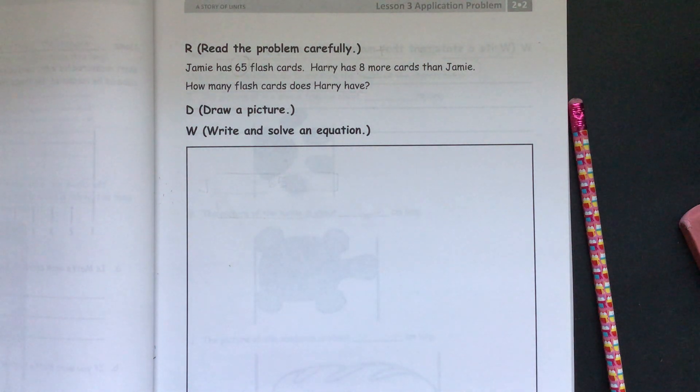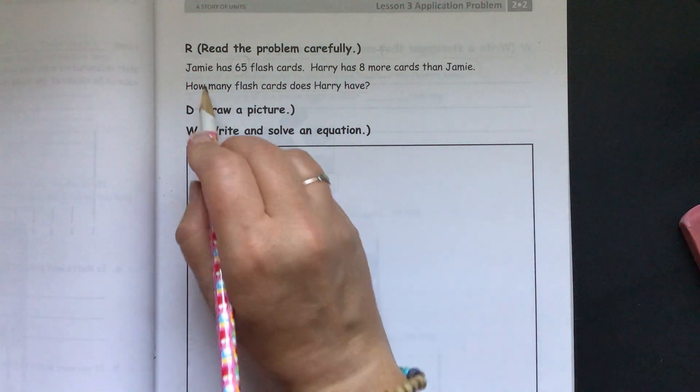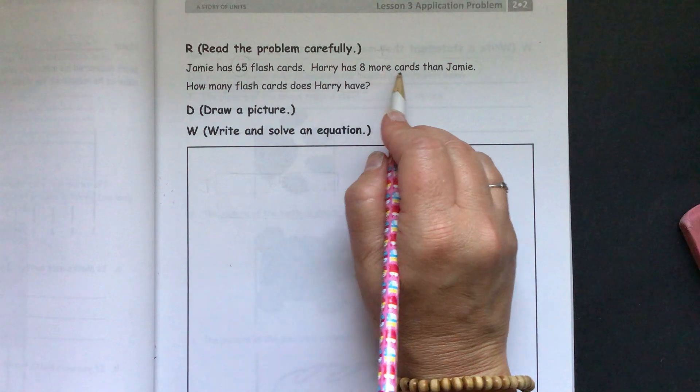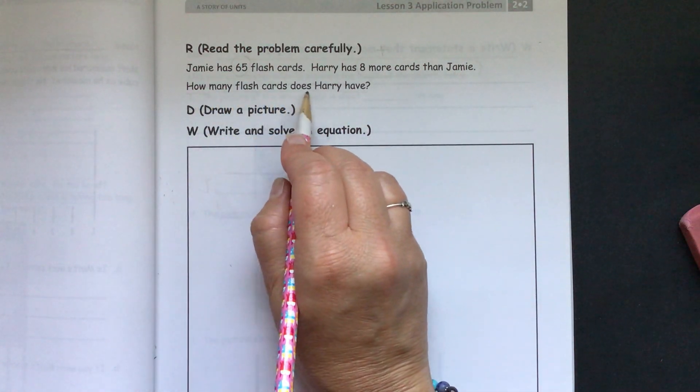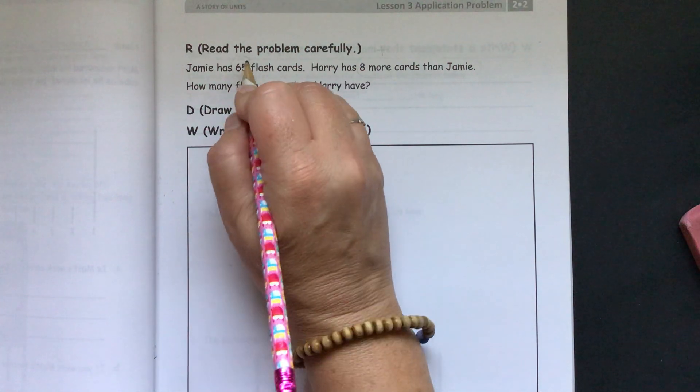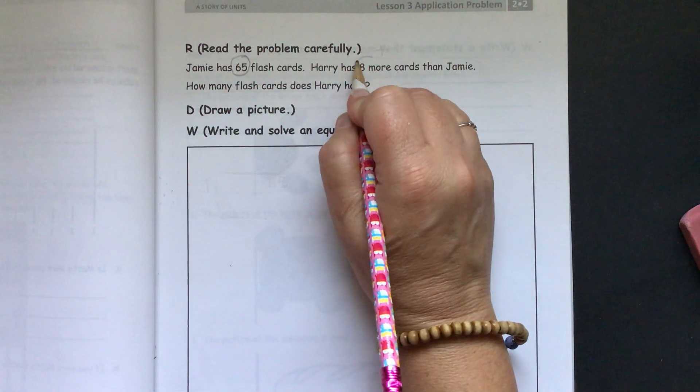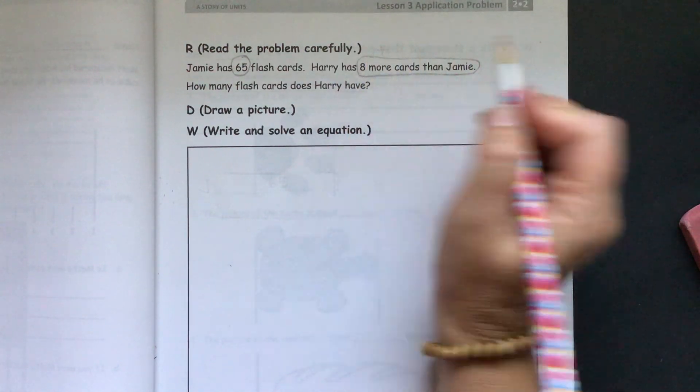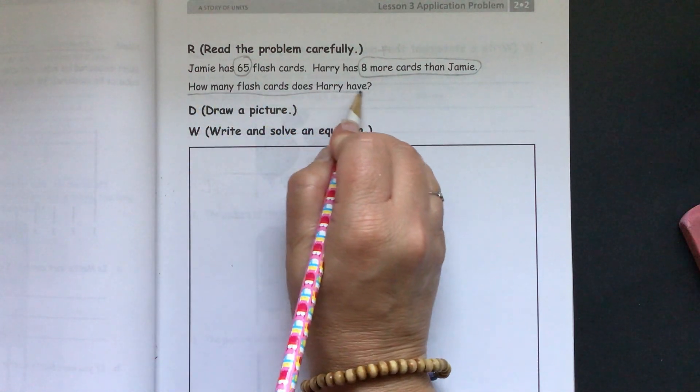We are going to start with our application problem. Jamie has 65 flashcards. Harry has 8 more cards than Jamie. How many flashcards does Harry have? So we need to circle our 65, and Harry has 8 more cards than Jamie. Our question is, how many flashcards does Harry have?